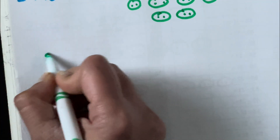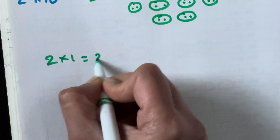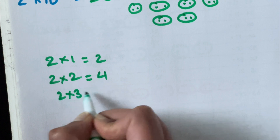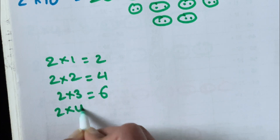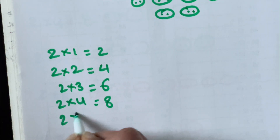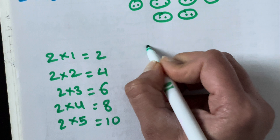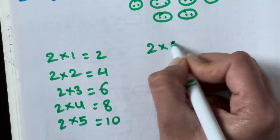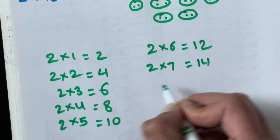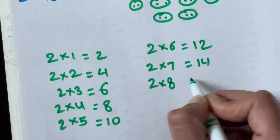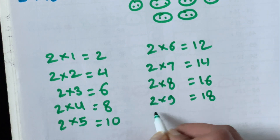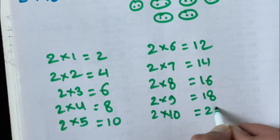Let's revise one more time. 2 times 1 is 2. 2 times 2 is 4. 2 times 3 is 6. 2 times 4 is 8. 2 times 5 is 10. 2 times 6 is 12. 2 times 7 is 14. 2 times 8 is 16. 2 times 9 is 18. 2 times 10 is 20.